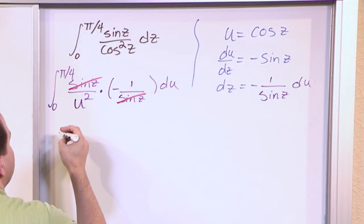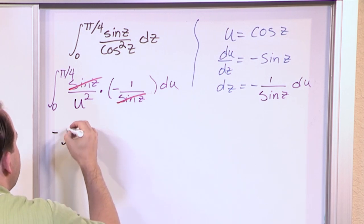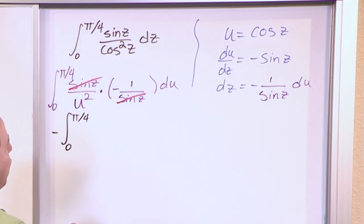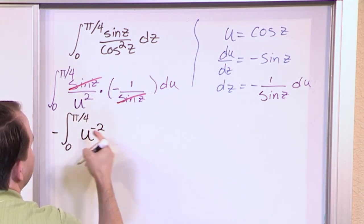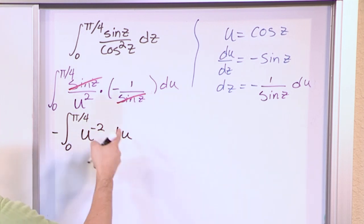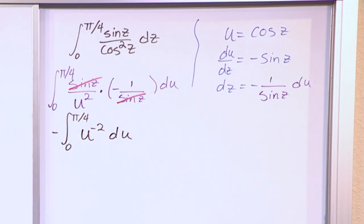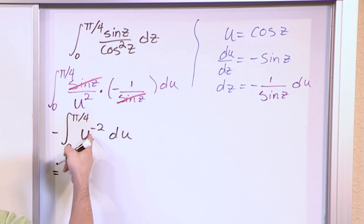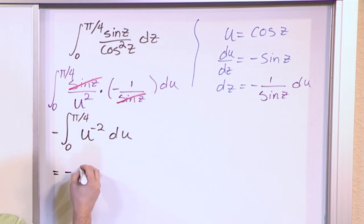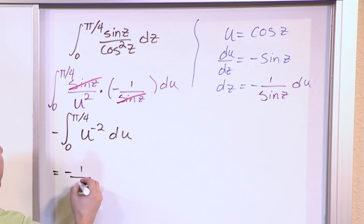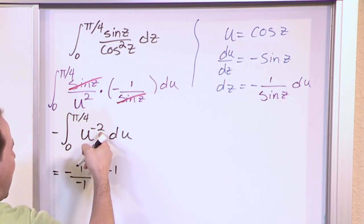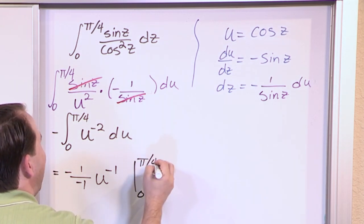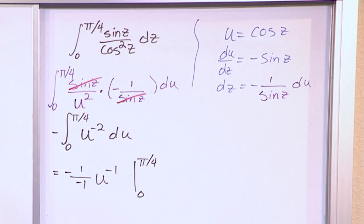After the cancellation, we have negative integral from 0 to pi over 4 of u to the negative 2, du. Integrating: the integral of u to the negative 2 gives negative 1 over (negative 2 plus 1), which is negative 1 times u to the negative 1. We can't evaluate at the limits yet because the answer is still in terms of u.